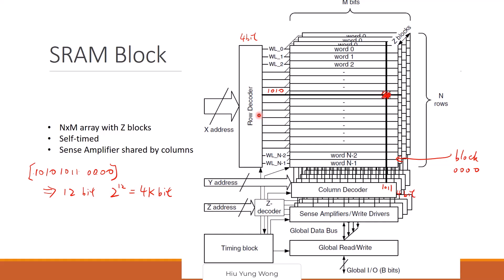So you have X decoder. You give an address 1010. Then it will highlight, it will enable this bit. Here, your column decoder takes the Y address. This is, for example, X, Y, Z. Then you will take this bit. And then you have a block decoder here. You get 0000. Then you'll get this.